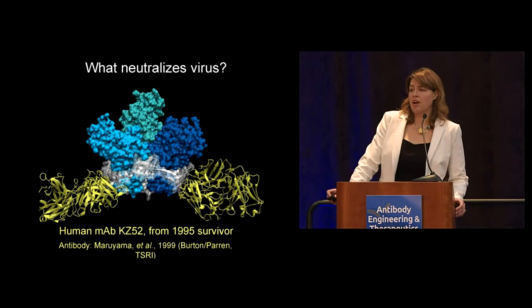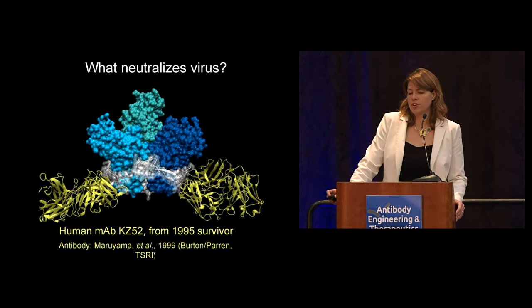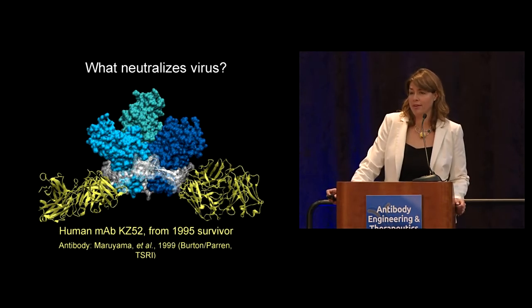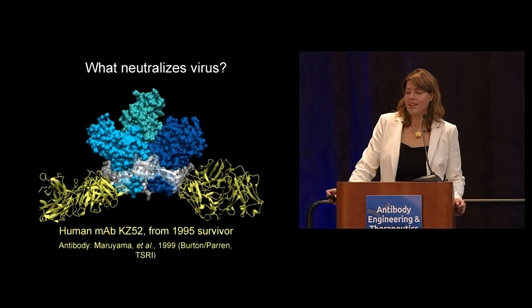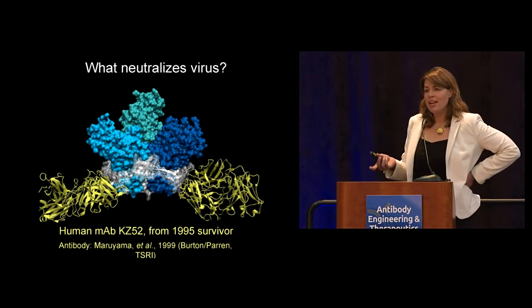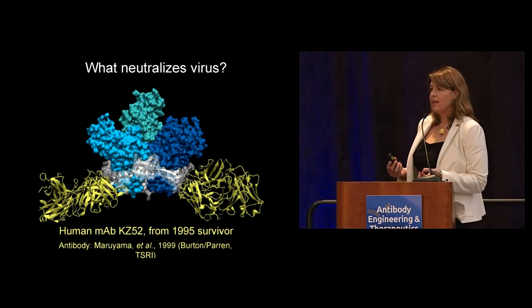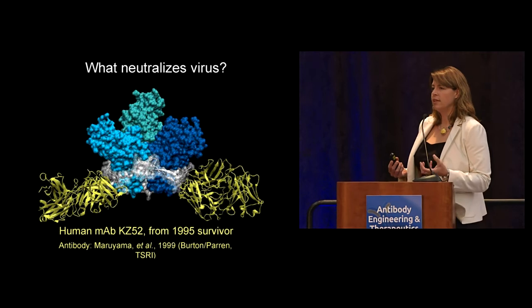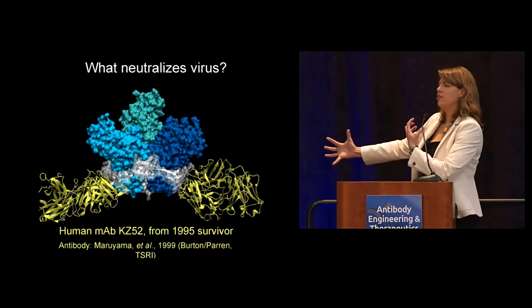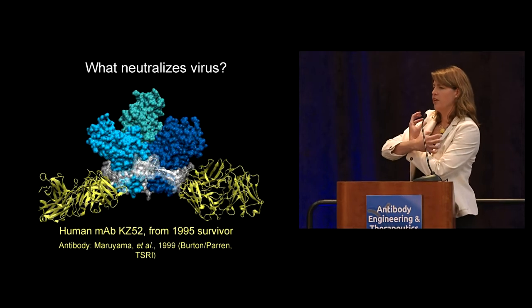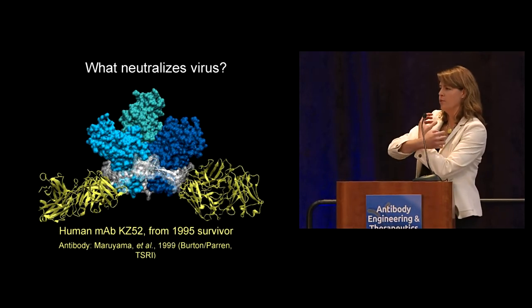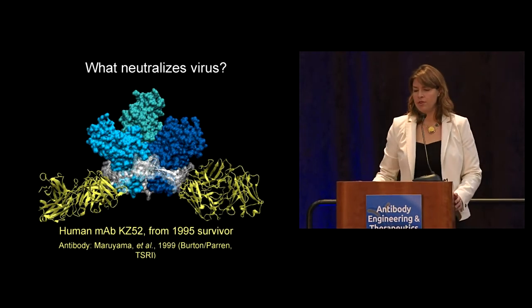The first antibody that ever neutralized Ebola virus well is KZ52. This is the crystal structure of the Ebola virus GP trimer in complex with human antibody KZ52 — a yellow FAB fragment at the bottom, raised by Dennis Burton and Paul Perrin at Scripps in 1999. KZ52 bypassed all the changing stuff at the top and anchored itself firmly to the bottom — mostly binding the white GP2 and a little bit of blue GP1. It's anchored onto the fusion subunit in its pre-fusion confirmation and keeps it from undergoing the conformational changes needed to drive membrane fusion. That's how it neutralizes.